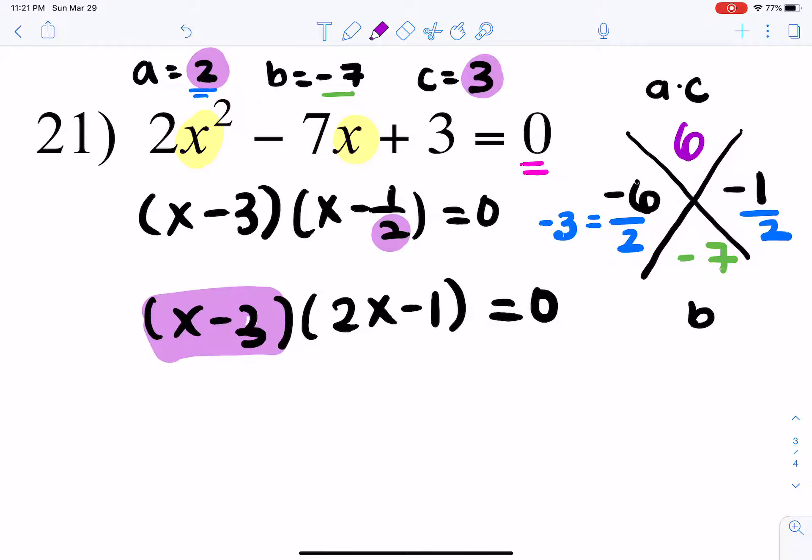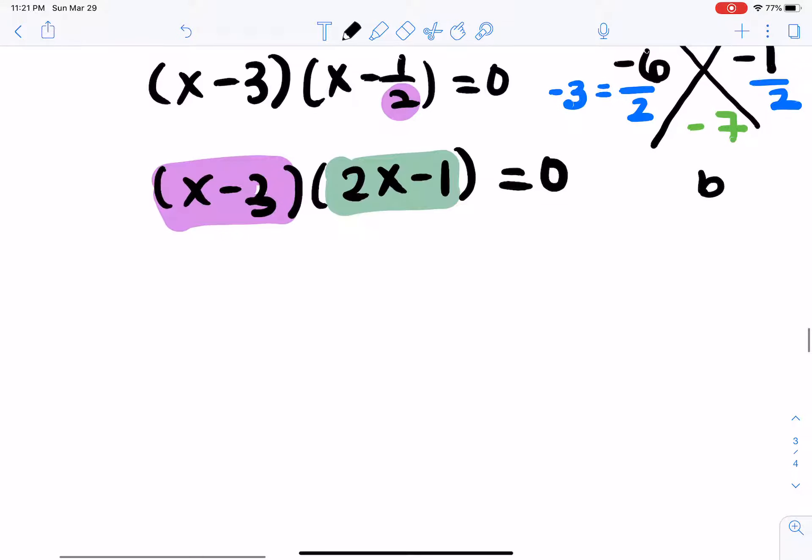Since these are the two factors, x minus 3 and 2x minus 1, you can have each factor equal to 0 for the zero property. So, you have x minus 3 equals 0, and 2x minus 1 equals 0. You can either include the parentheses or not, but you'll still get the same answer.